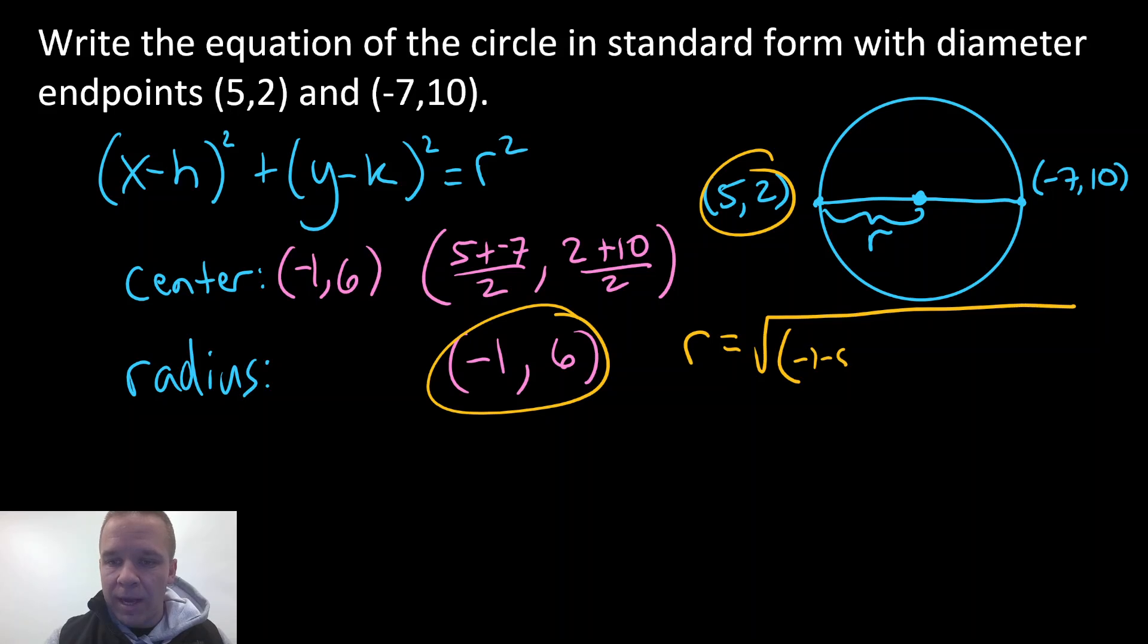so -1 minus 5, quantity squared, plus, and then my y values, 6 minus 2, quantity squared. And again, you could have switched up your x's, you could have switched up your y's, so I could have done, you know, 2 minus 6, that's fine as well.